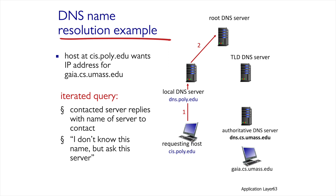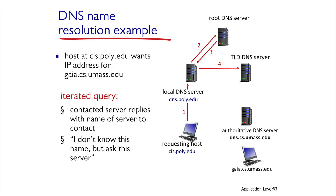The local server refers to the root DNS, which returns an 'I don't know the required address' message, but sends the IP address of the TLD server below it, which might know the address because it fits the EDU field. The local server refers to the TLD server, which returns a response with the address of the authoritative server of cs.umass.edu. The local server refers to the authoritative server, which provides it with the website address. The local server saves the address in the cache while resetting the time to live, and returns a response to the client.